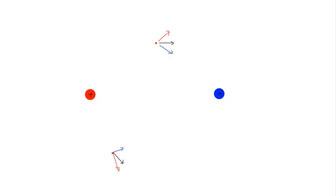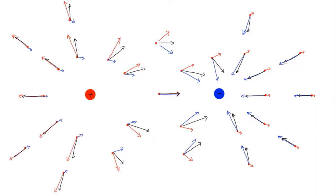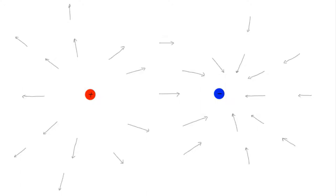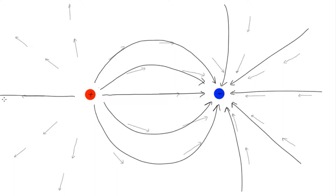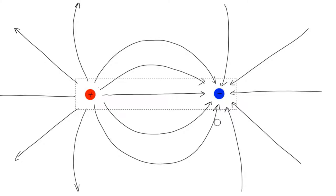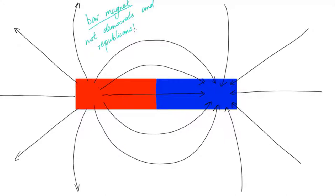Now, doing this again for every single point around these two charges — if we look at the force that the particle experiences at every single point, we can see the electric field. Using field lines to represent the electric field, we would see this picture. The electric field surrounding two oppositely charged particles looks like the magnetic field surrounding a bar magnet.